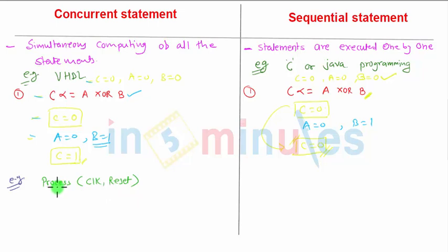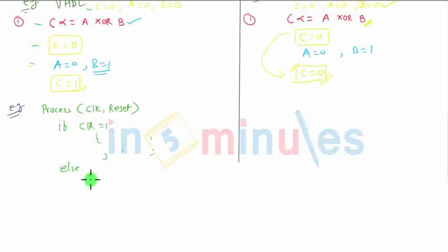So in the programming, if the process particular is dependent on clock and reset, let's say if I am writing if in the program, clock is equal to one, then set of instructions to be executed. Else, another set of instructions, and I will write here end process.